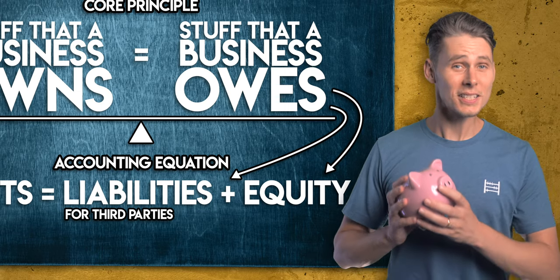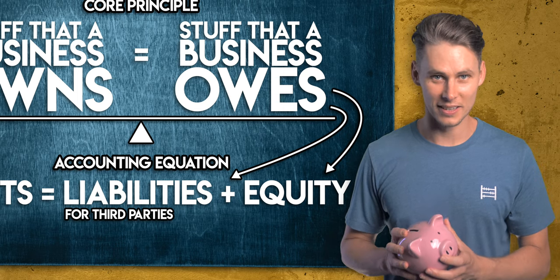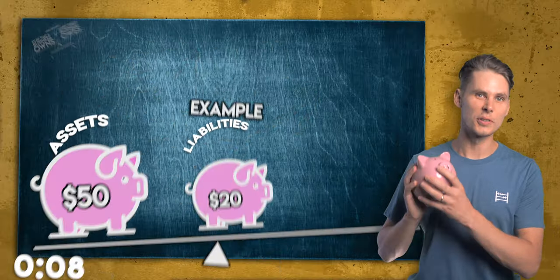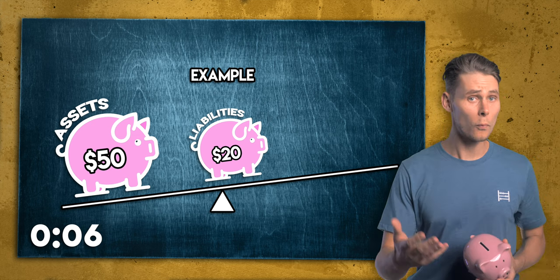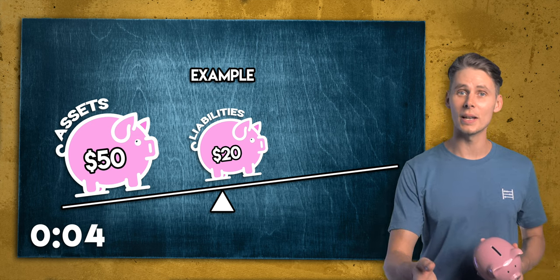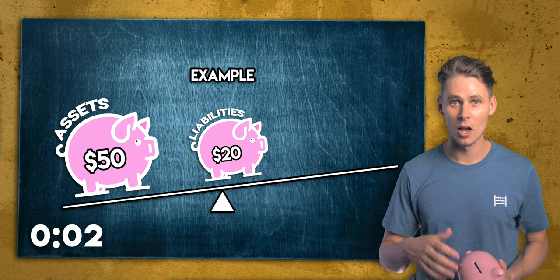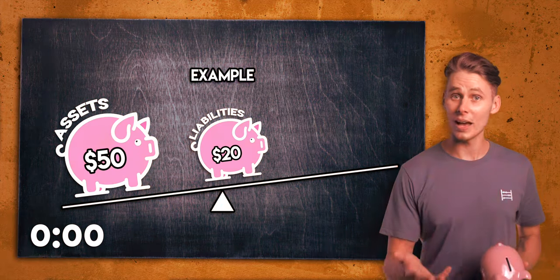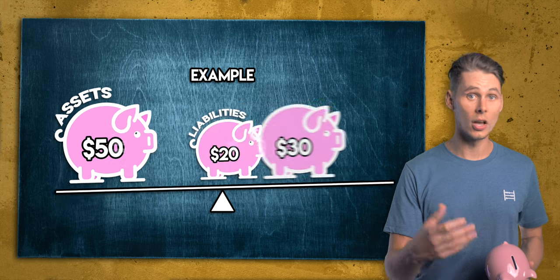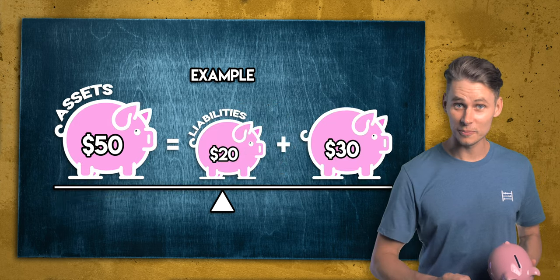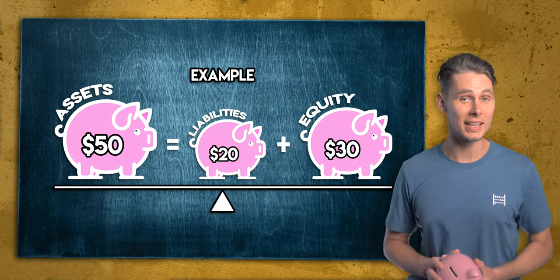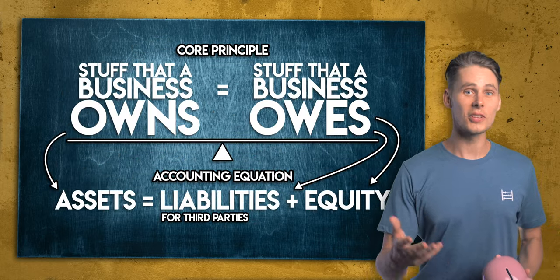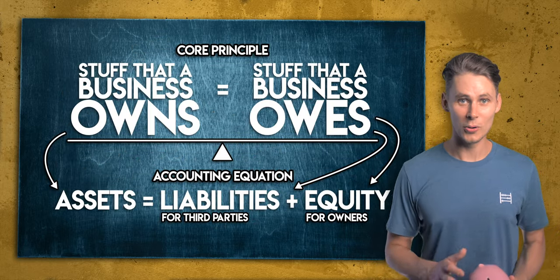But a business also owes equity. Back to our example: your piggy bank holds $50 in assets, of which $20 are a liability owed to a friend. We know that the accounting equation has to balance, so that means your business also owes $30 to you. This is your equity in the business. So equity is the stuff that a business owes to its owners.